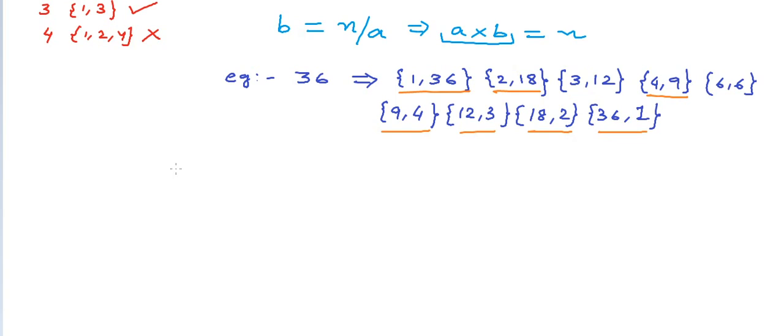For a and b, there can be a case when a is equal to b and that would happen only if n is a perfect square and in this case, this equation will translate to a square is equal to n or a is equal to square root of n. And in our example, 36 is a perfect square, so we are able to get such a pair of cofactors where a is equal to b.